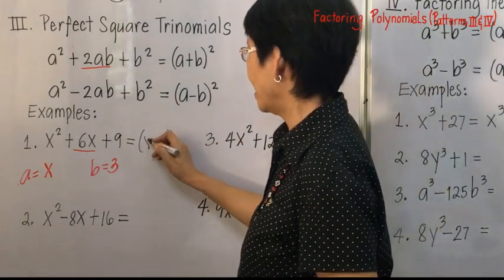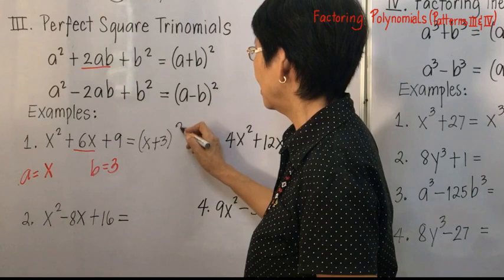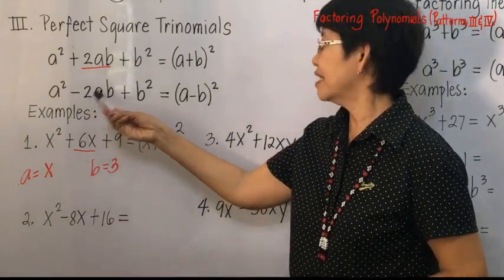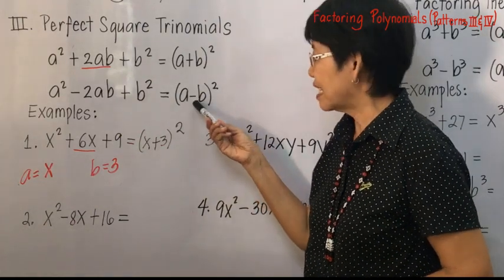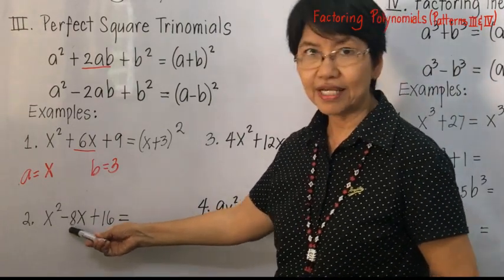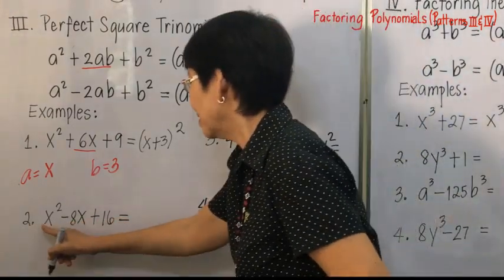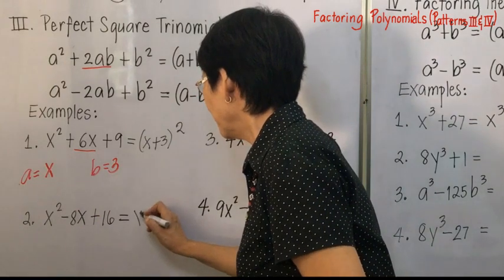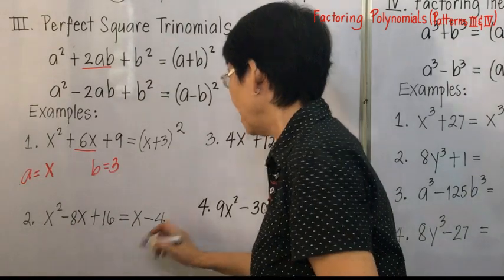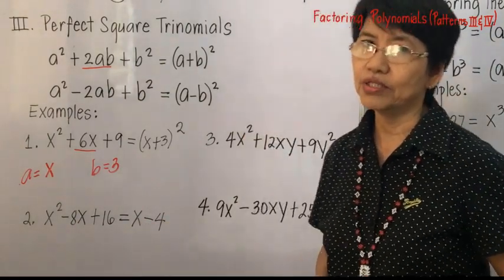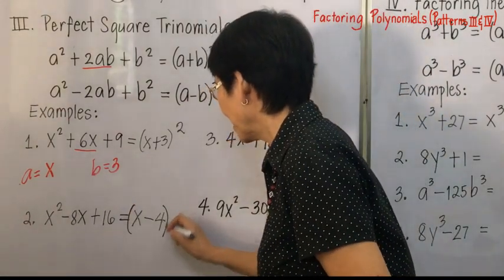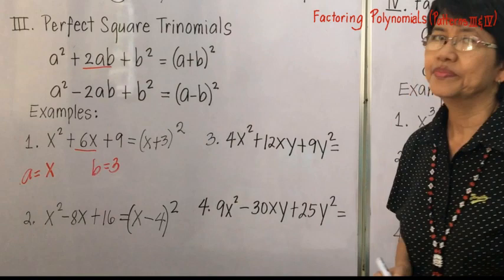So you have x plus 3, quantity squared. If the middle term is negative, then you get a negative second term. In number two, the middle term is negative, so we get the square root of the first term (x) and the square root of the last term (4), giving x minus 4, quantity squared.